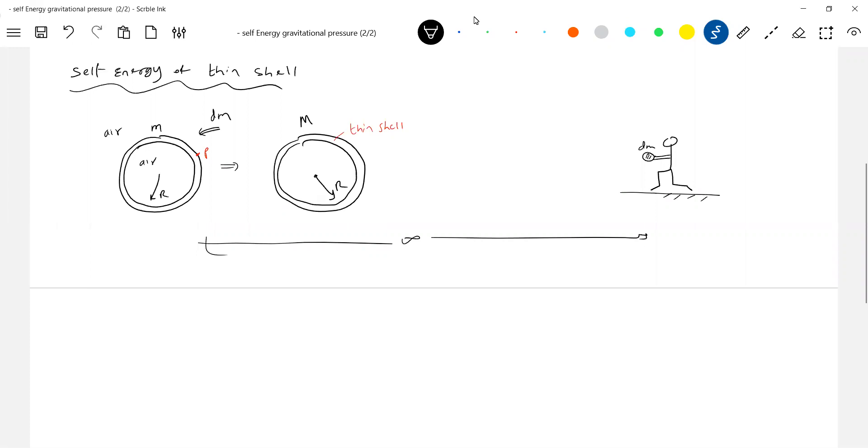You will walk slowly from infinity and add mass onto the surface. Like that when you keep on adding mass, it will become a thin shell of mass capital M and radius R.